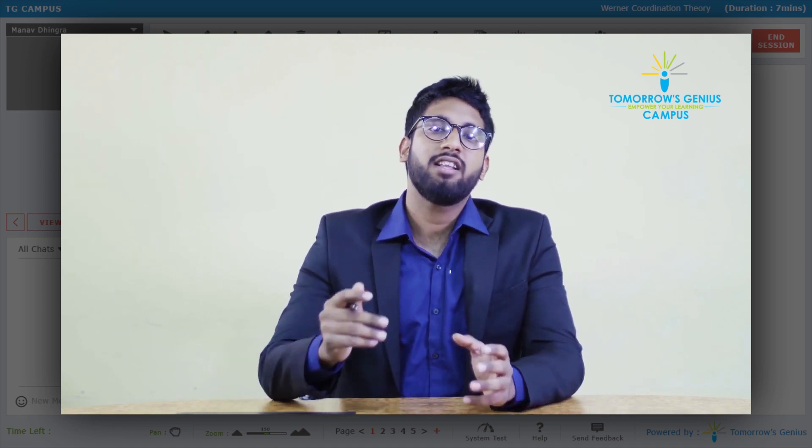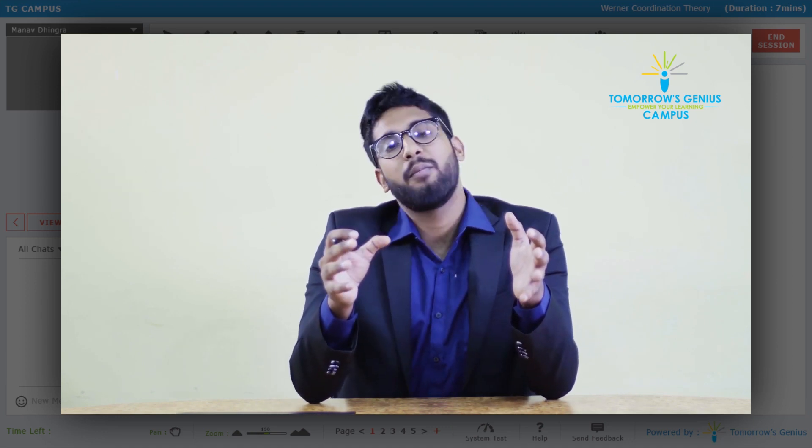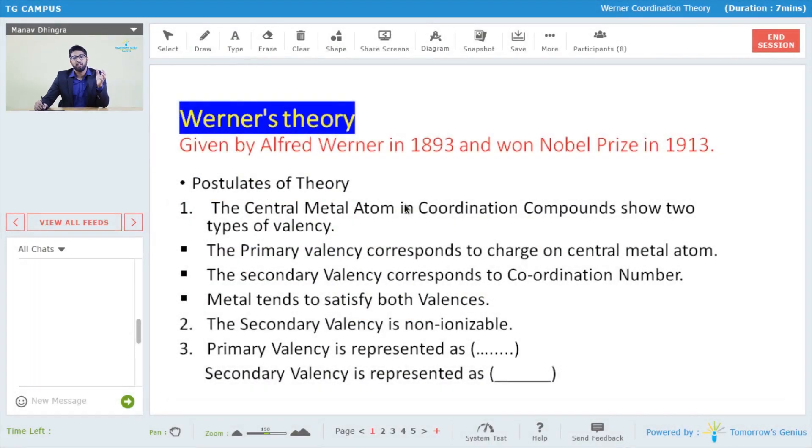Today we will be targeting the first theory ever given by a scientist on coordination compounds. It was given by Alfred Werner in 1893 and he won the Nobel Prize in 1913 for his work.